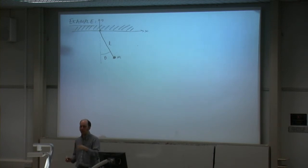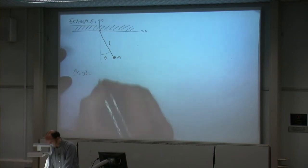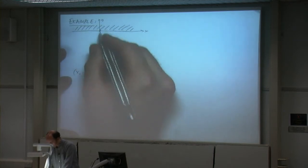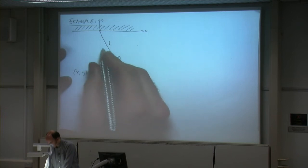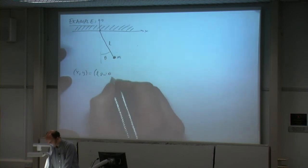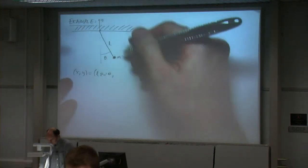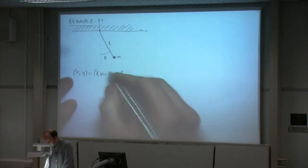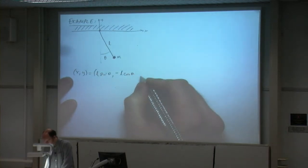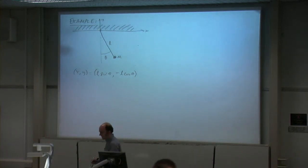Then we find the velocity by differentiating with respect to time. The x, y position of the pendulum bob: in the x direction we've got L sine theta — that's the x position of the bob. If y is upwards is positive, then downwards is negative, so I have a minus sign: y = -L cosine theta, because it's the adjacent side. There's the position of the bob in x, y coordinates.